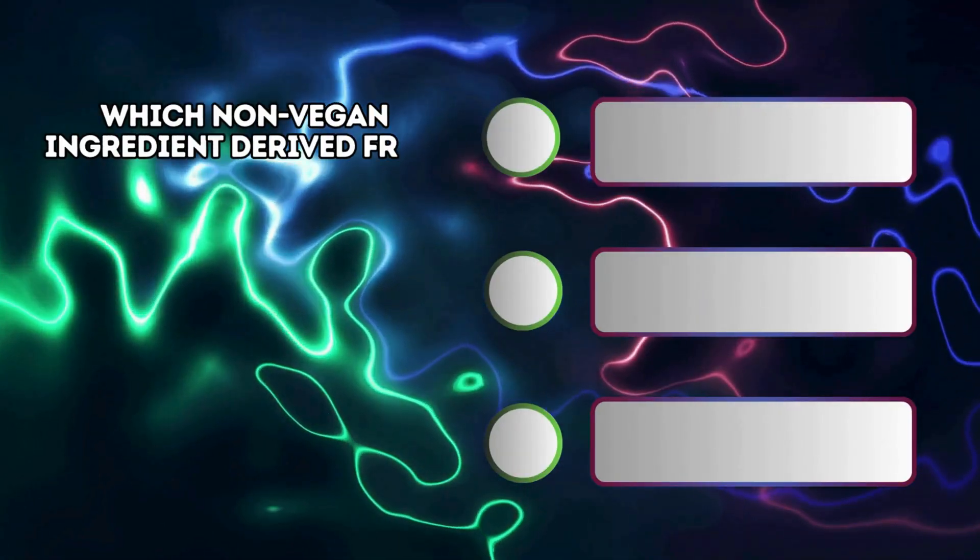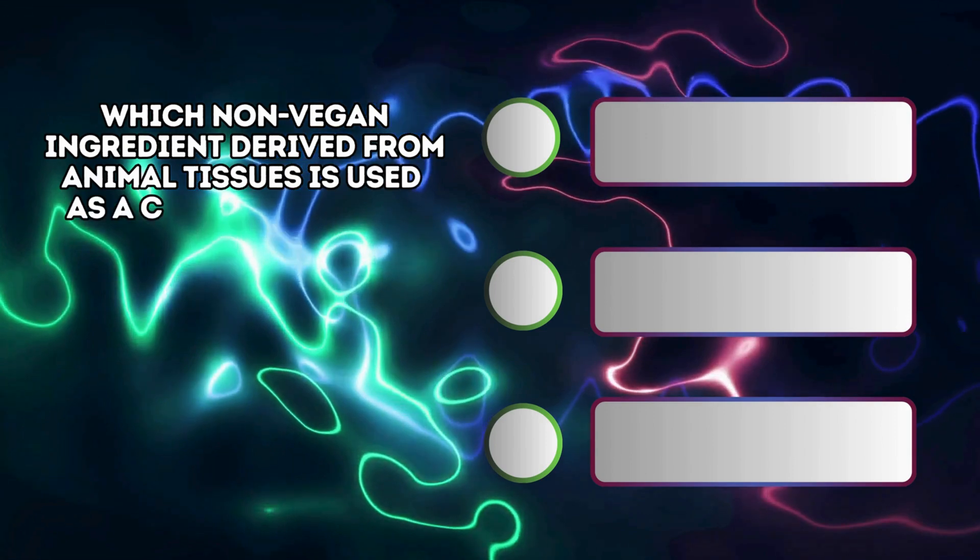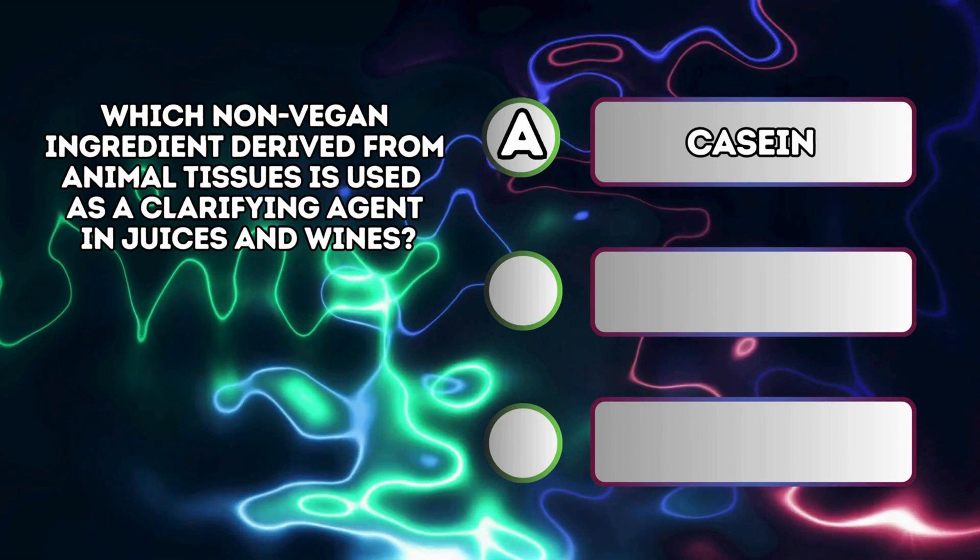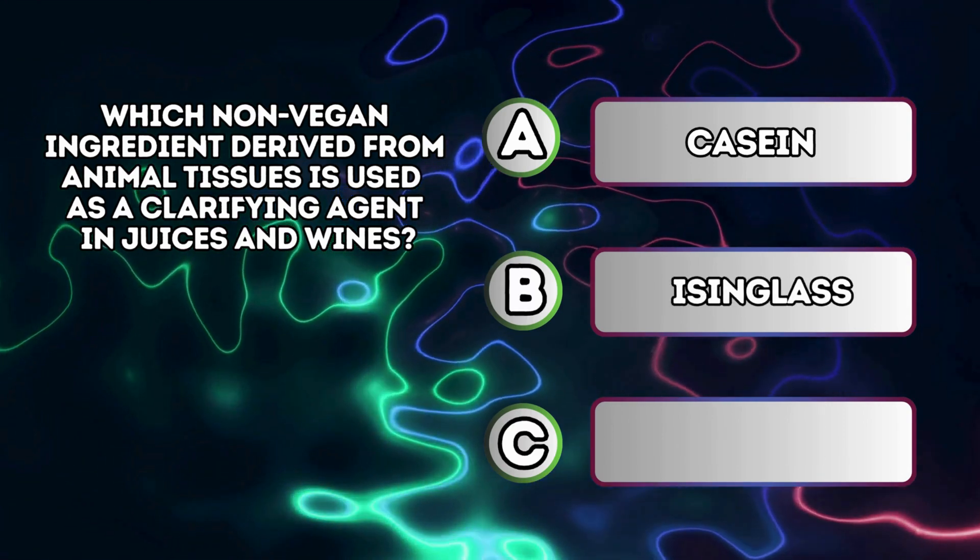Which non-vegan ingredient derived from animal tissues is used as a clarifying agent in juices and wines? A. Cassine B. Isinglass C. Gelatin